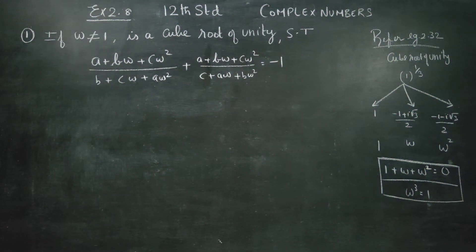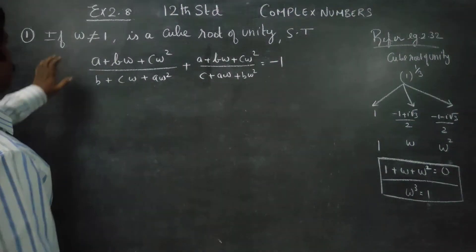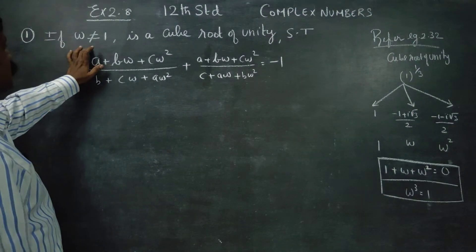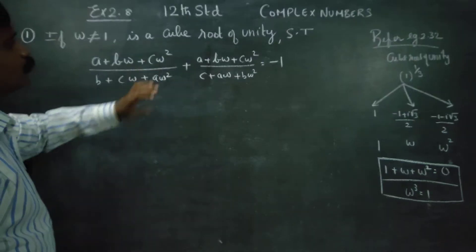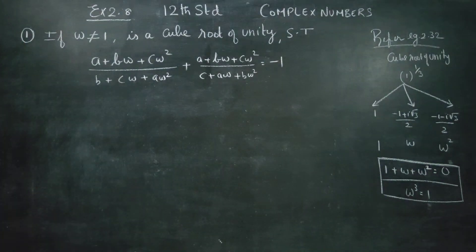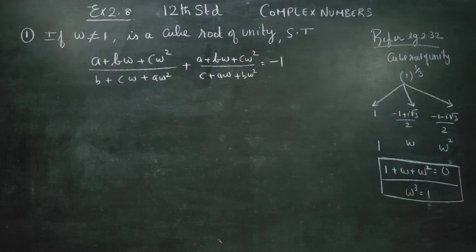Dear 12th standard students, in exercise number 2.8, sum number 1, if omega is not equal to 1 and is a cube root of unity, show that the answer is equal to minus 1.